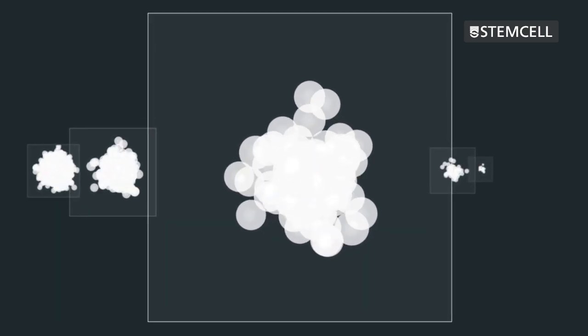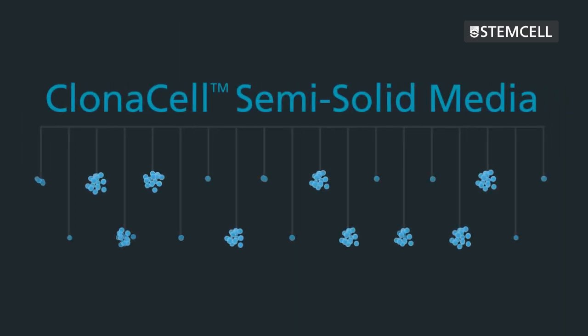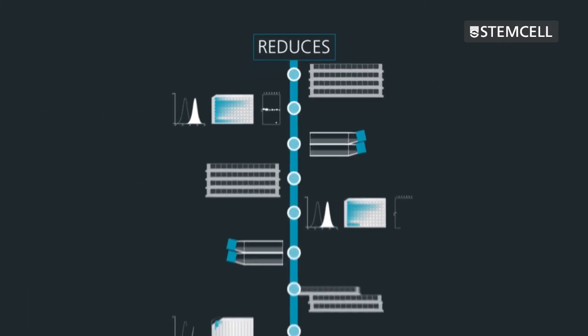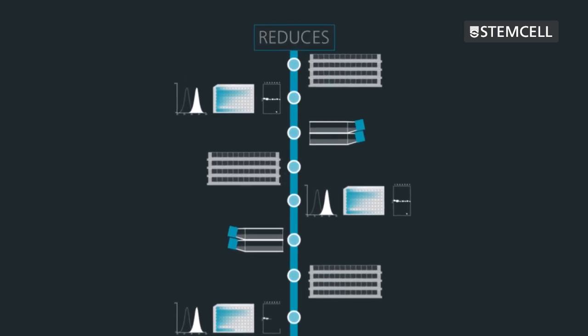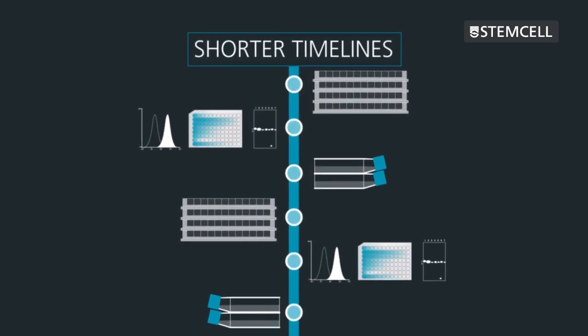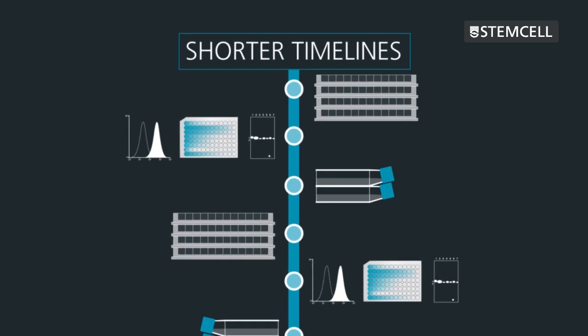Semi-solid cloning with Clonacel Media makes it easy to isolate a large number of diverse clones, each with a high probability of monoclonality. This method reduces the need for subcloning along with the associated screening steps. Fewer cloning and screening steps can mean significantly shorter timelines for isolating monoclonal cell lines.